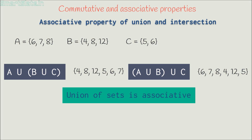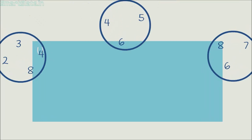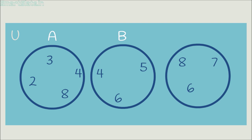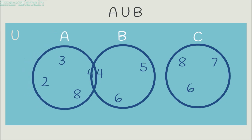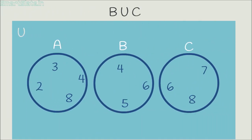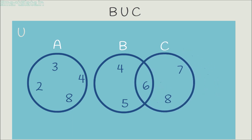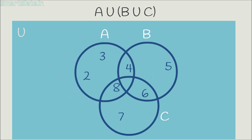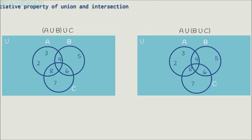Let's see another example — this time using Venn diagrams. These are the three sets: Set A with elements 2, 3, 4 and 8; Set B with elements 4, 5 and 6; and Set C with elements 6, 7 and 8. Let's calculate the union of A and B — element 4 is common among these two sets. Now make the union of C with this. This is the Venn diagram of (A union B) union C. Now find the union of B and C, then find the union with A. Observe — both diagrams are the same, and we have proved the associative property of union using Venn diagram.